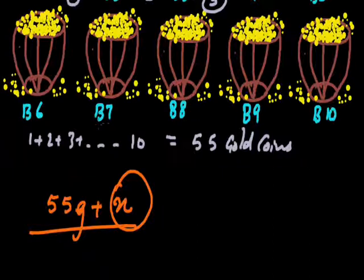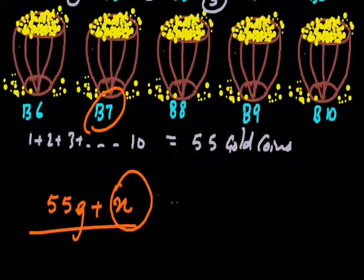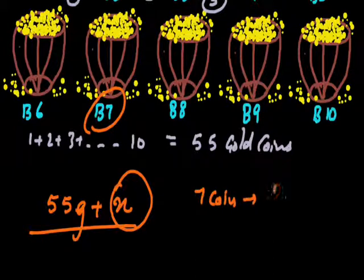And to your surprise, the value of x will correspond to the barrel which contains 2 gram gold coins. Let us see how. Say suppose it was B7 which was a special one. So all the barrels will contribute coins whose weight is 1 gram, but B7 is going to contribute the coins whose weight is 2 grams. So B7 is contributing 7 coins of 2 grams each.